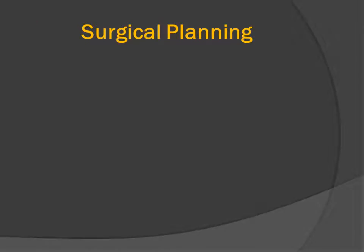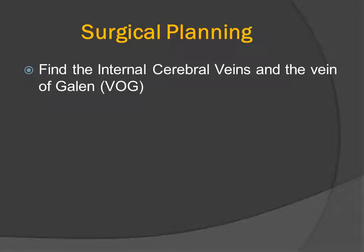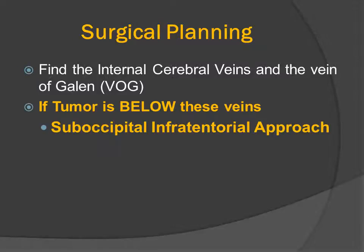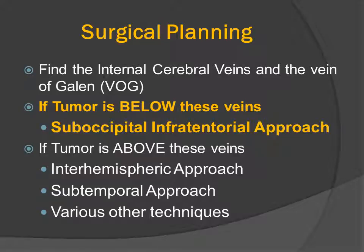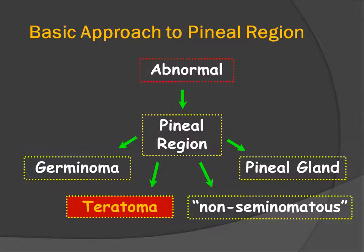In the context of surgical planning, the most important information is the venous landmarks. We have to locate the flow voids for the internal cerebral veins and the vein of Galen as well as the straight sinus. If the tumor is below these veins, the neurosurgeon may choose a suboccipital infratentorial approach. If the tumor is above these veins or has a different anatomic relationship, then a wide variety of surgical approaches have been tried for pineal region mass resection.